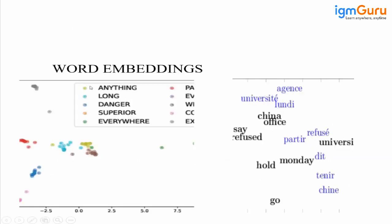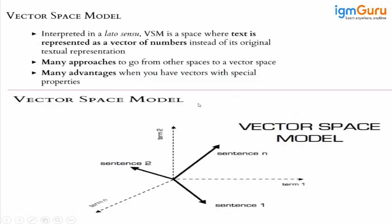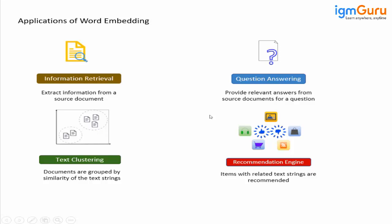So when we have data, we represent it from a high-dimensional space to a low-dimensional space. We pass words to the model and perform word embedding. In word embedding, every sentence is represented by one vector, and we check how sentences are close together, how words from different sentences are close to each other, and then we perform a similarity check to fetch similar sentences and similar words.